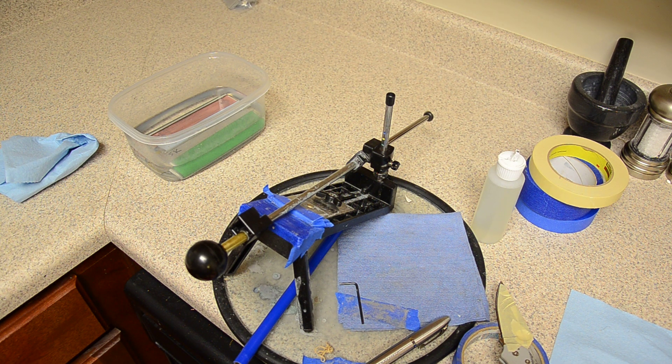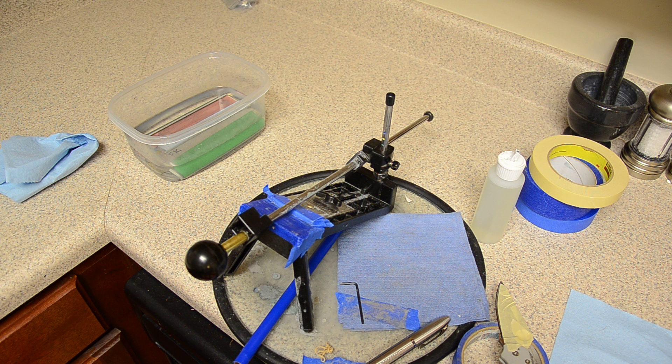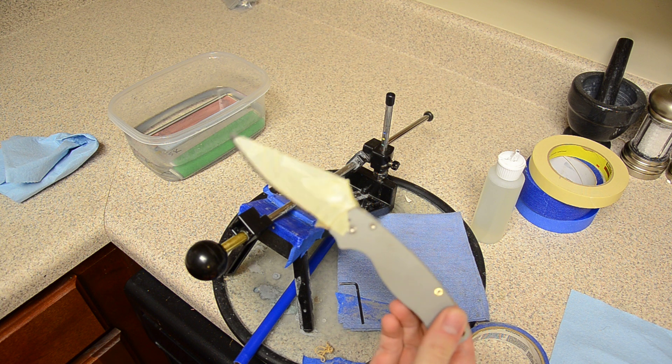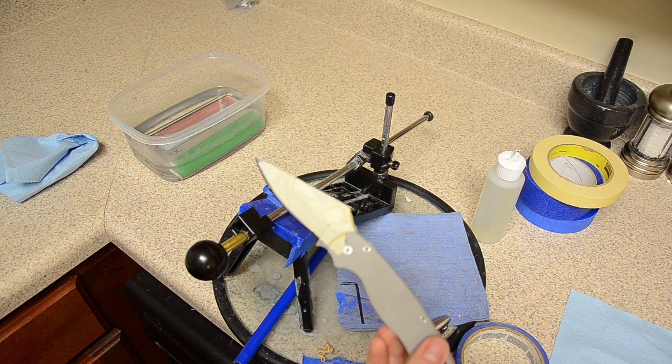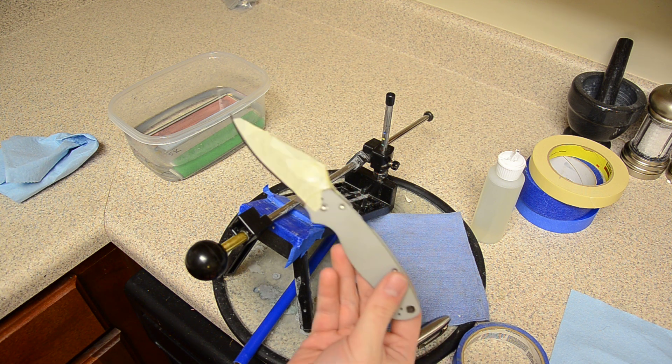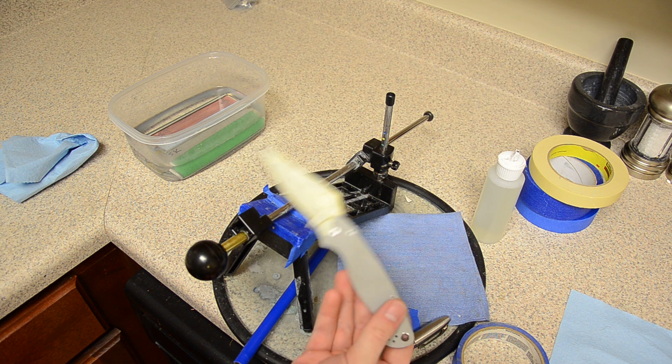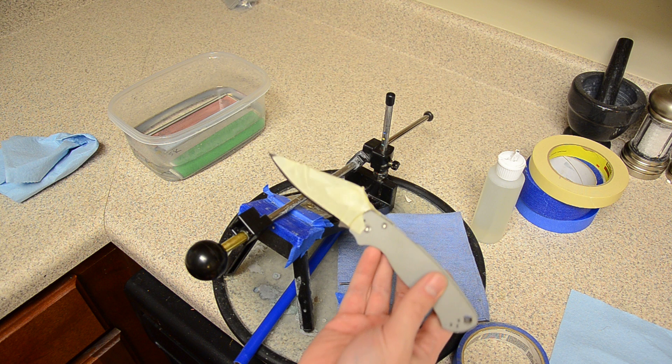Hey guys, people asked me to do more sharpening videos so that's what I'm gonna do. Just tested the 20CP Para 2, so I'm gonna resharpen it. I was gonna put a micro bevel on it with a Sharpmaker, but I want a little different geometry, so gonna do it on the Edge Pro.